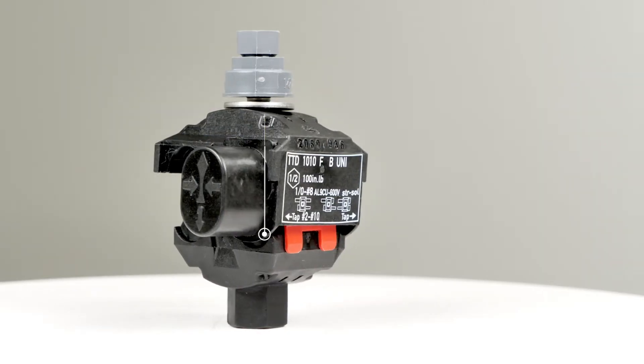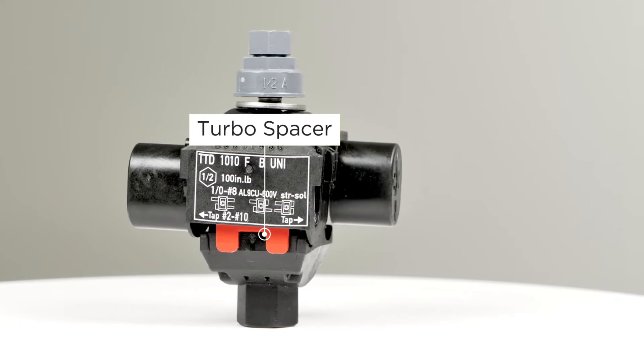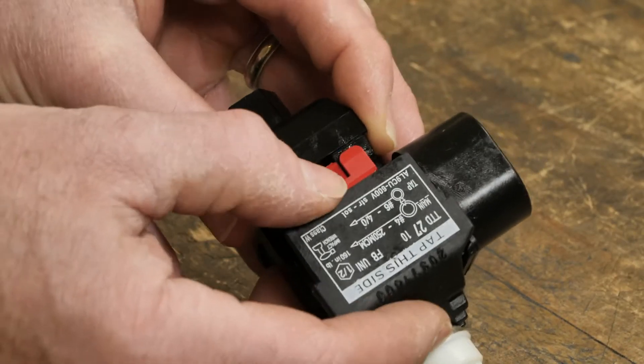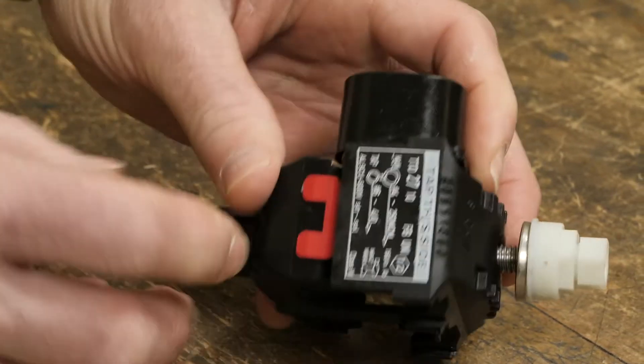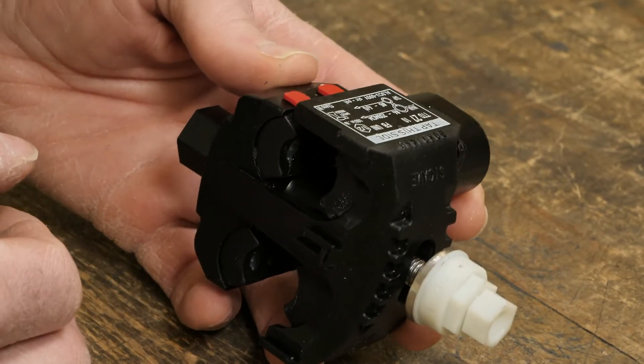There is a red turbo spacer located on the inside of the tap side. This spacer is used to hold the connector open to assist with the installation of the tap or splicing conductor. The spacer will snap off during installation to allow the insulating teeth to pierce through the tap or splice conductor insulation.